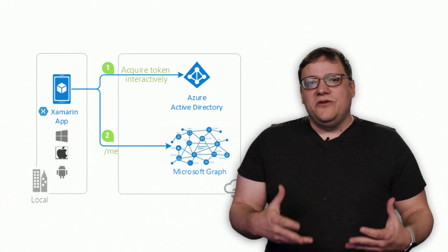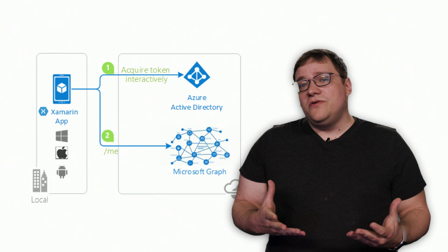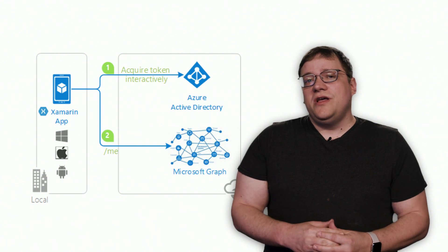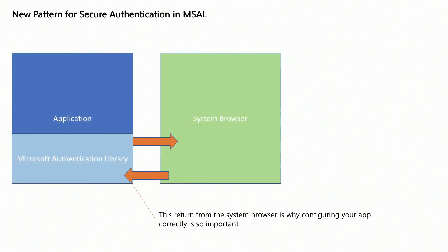The signed-in user would have those permissions. Once you have a token with those permissions, you would then go and access the Microsoft Graph, and I'll show you both of those. One of the other things I wanted to bring up before we get to the demo itself is there's a new pattern we're using now for secure authentication.